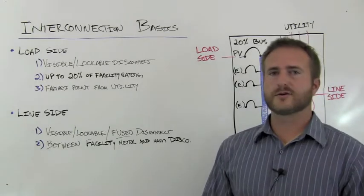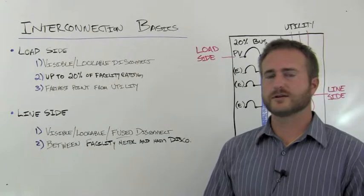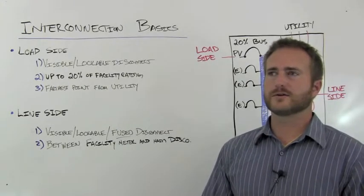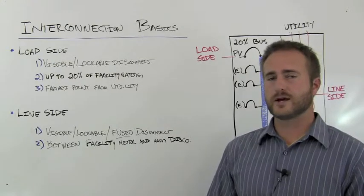The load side has three main points you need to keep in mind. You're going to need to install a visible lockable disconnect for the utility to use. You're going to need to install up to and limited to 20% of your facility's main rating.